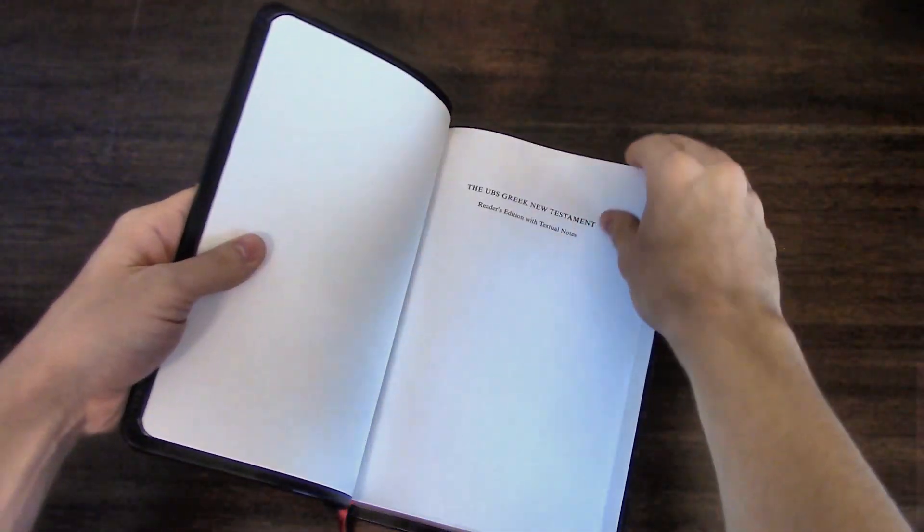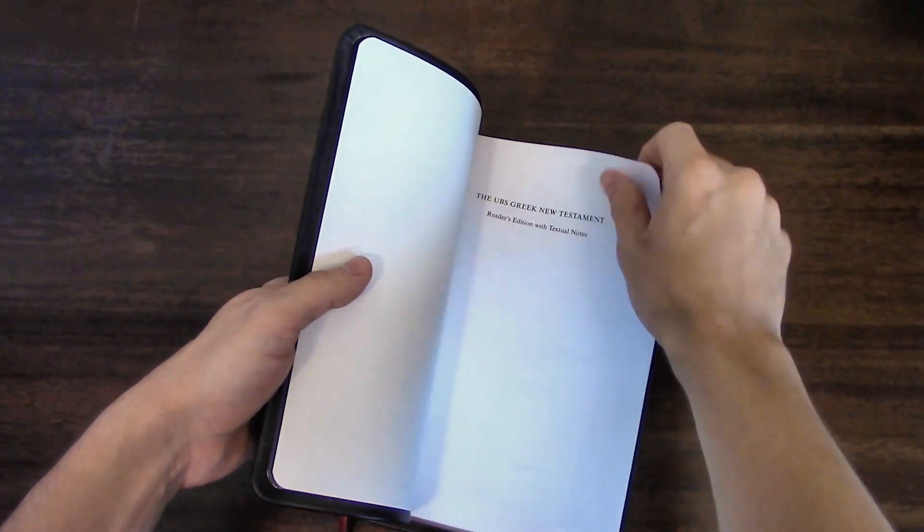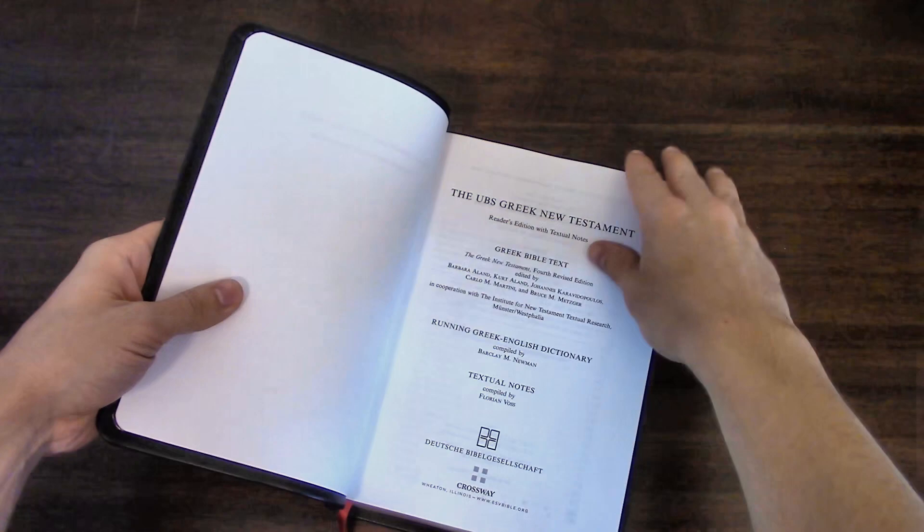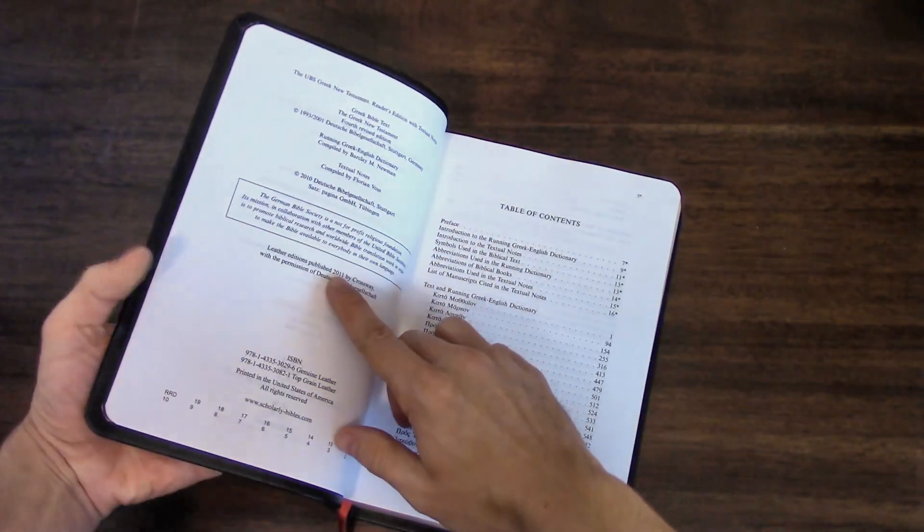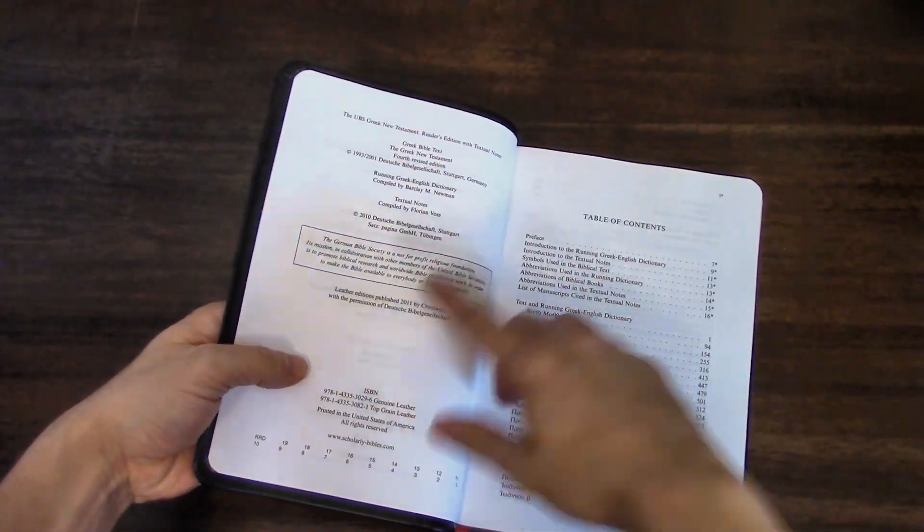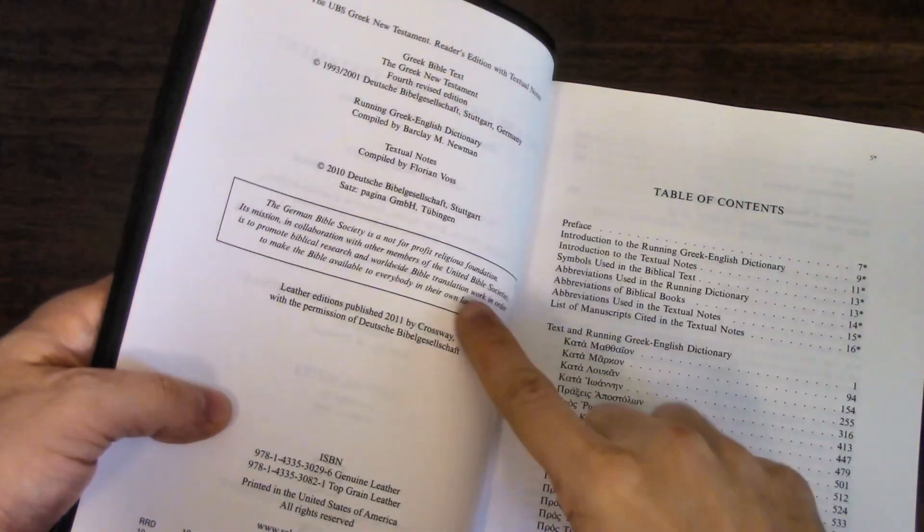So it's the UBS Fourth Edition. The most recent edition of the UBS Greek New Testament is the fifth, but this one was published in 2011 by Crossway, and it's in a black top grain leather.